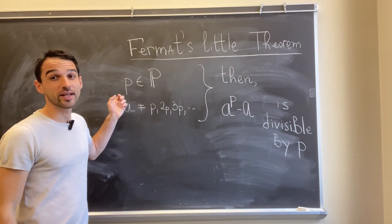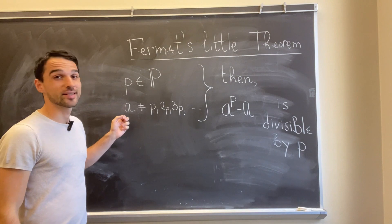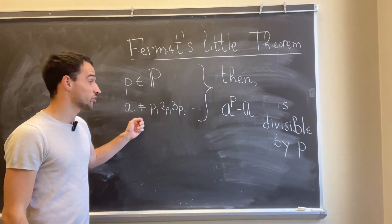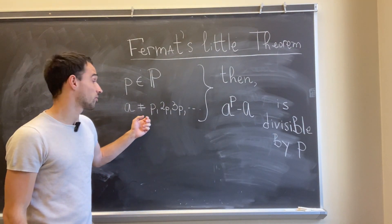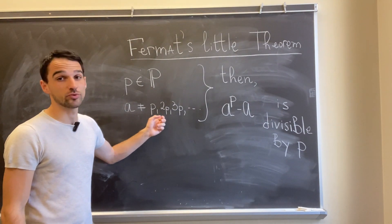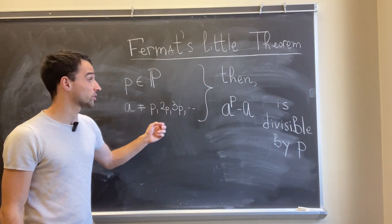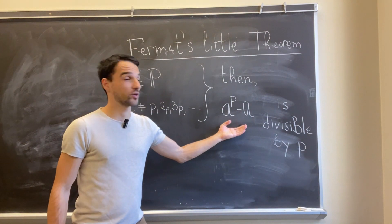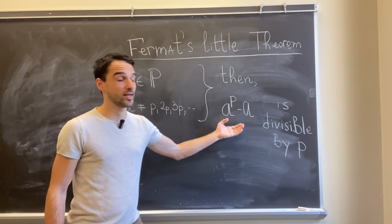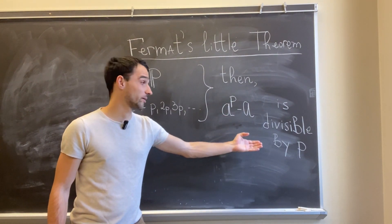So here is the theorem. If I give you any prime number p and another number a, which is not a multiple of p, so a is not p, 2p, 3p, and so forth, then this quantity over here, a to the power p minus a, is divisible by p.